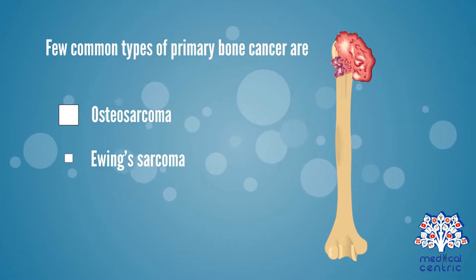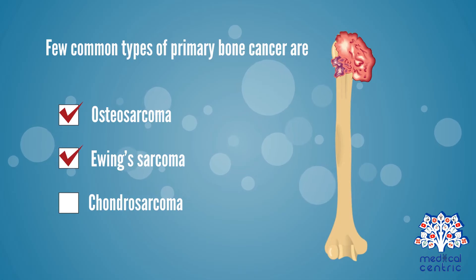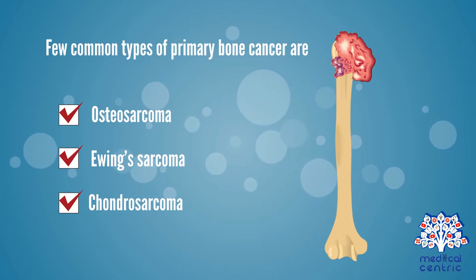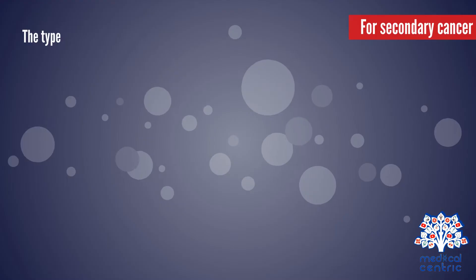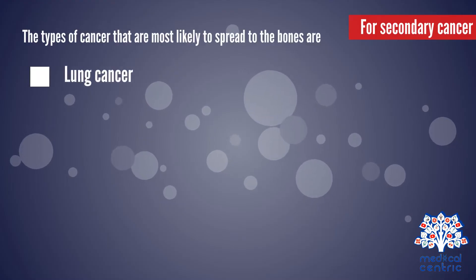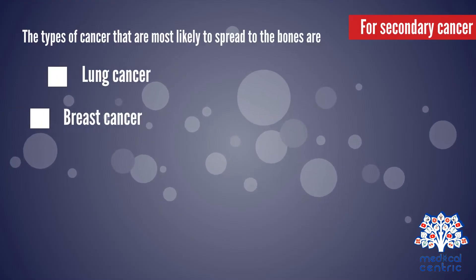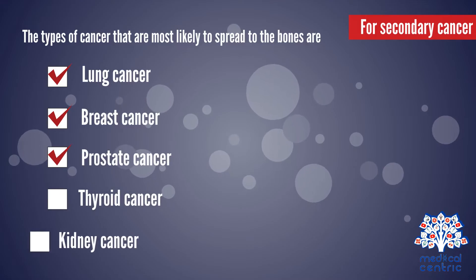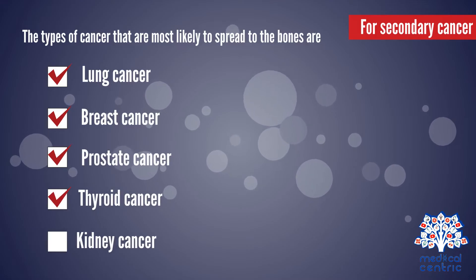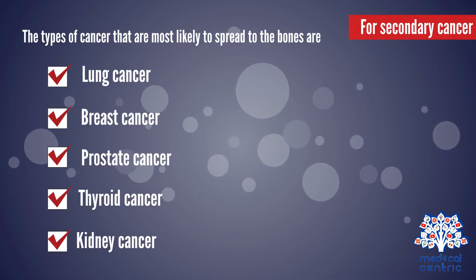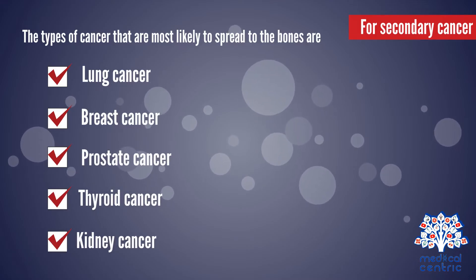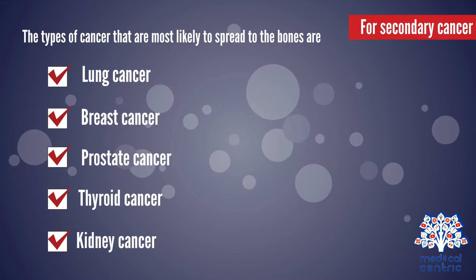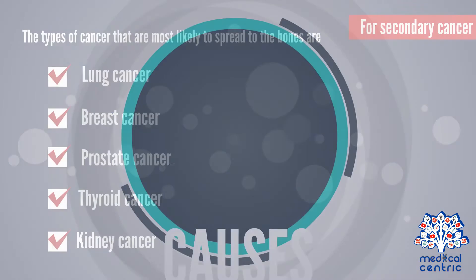A few common types of primary bone cancer are osteosarcoma, Ewing sarcoma, and chondrosarcoma. For secondary cancer, the types of cancer that are most likely to spread to the bones are lung cancer, breast cancer, prostate cancer, thyroid cancer, and kidney cancer.